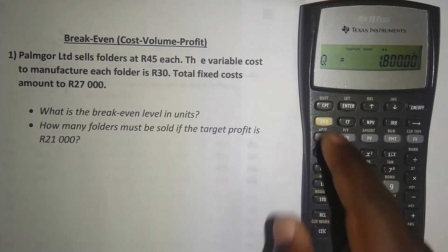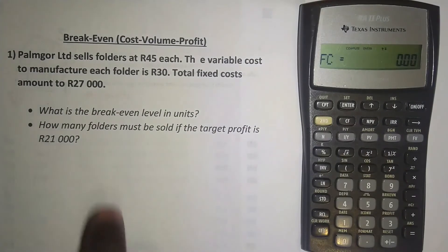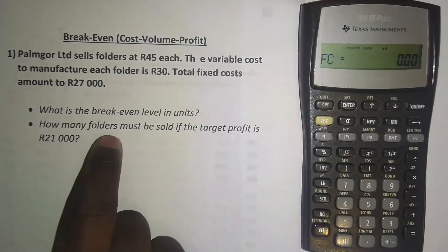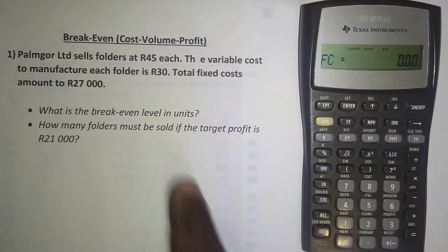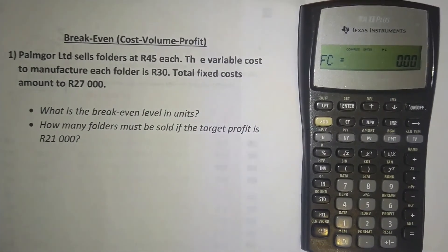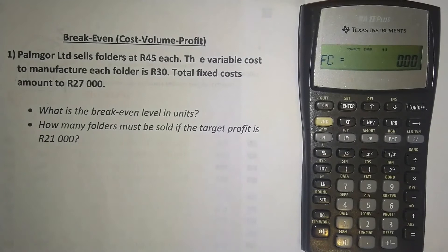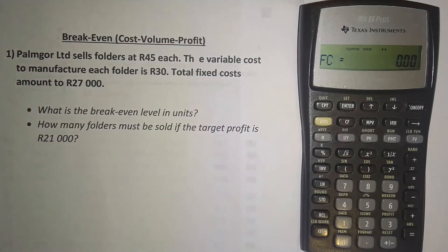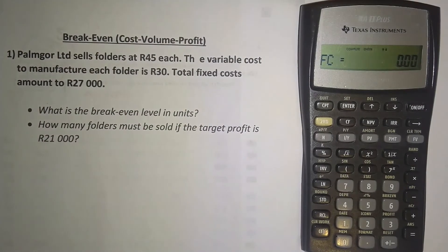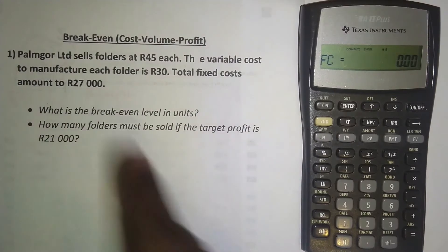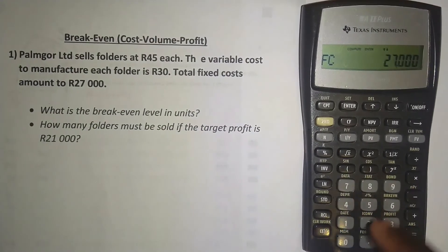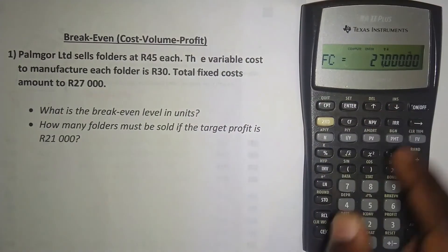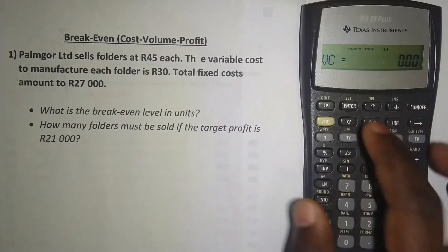Let me clear my work. Now let's do the second question: how many folders must be sold if the target profit is 21,000 rand? You want to make a profit of 21,000 rand — how many folders do you need to sell? Enter 27,000 for the fixed costs, press Enter, then press the downward arrow.